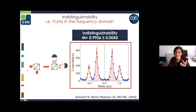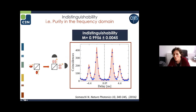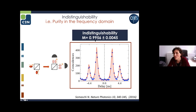In 2016, combining all these ingredients, we demonstrated highly indistinguishable photons. We generate two photons from the same device, send them on a beam splitter — if photons are indistinguishable they exit together, giving no coincidences at zero delay. We observed virtually no signal in the noise at zero delay, demonstrating indistinguishability above 99% for the first time.